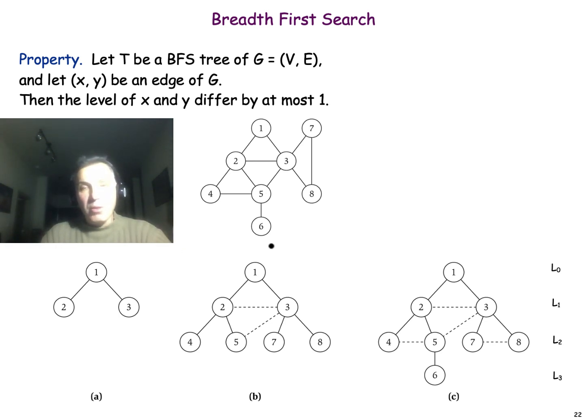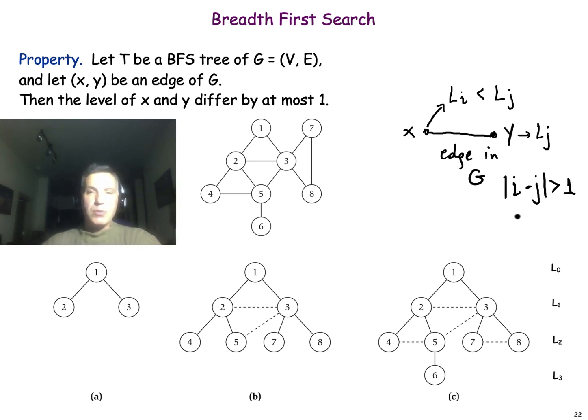How would you prove that? You can work with contradiction. Assume that we have two nodes, X and Y, that are connected in the original graph with an edge, but they belong in different layers. Without loss of generality, we can assume that X belongs in some layer Li, and Y belongs in a layer Lj, where i and j differ by more than one. You can assume without loss of generality that Li is before Lj. When we first visited node X, then given that Y is a neighbor of X, we should have discovered Y, either for the first time, in which case Y would belong in layer Li plus 1, or Y was already discovered in the same layer with X. In either case, we have a contradiction, because we assumed that the layers i and j differ by more than one.